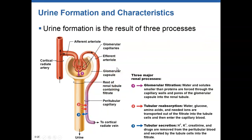We form urine through three basic processes. First, we have glomerular filtration, which occurs in Bowman's capsule at the glomerular capillaries. We filter out anything and everything that can fit through the capillaries and those filtration slits.